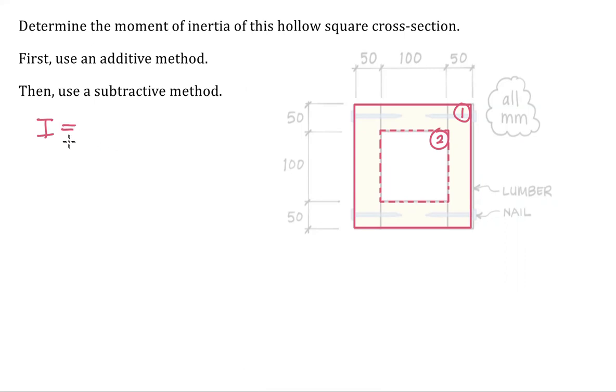Our parallel axis theorem hasn't changed. So if we want the moment of inertia about that centroidal x axis right there, then we want to take the summation of the moments of inertia of each piece about its own centroidal x axis, add the summation of the areas times the distance squared. When we are using a subtractive method, all you need to do is remember to put a minus sign by all of the terms that relate to our void shape two.